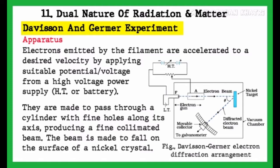Electrons emitted by the filament are accelerated to a desired velocity by applying suitable potential or voltage from a high-voltage power supply, H-T or battery.